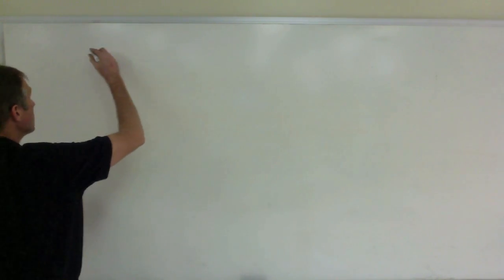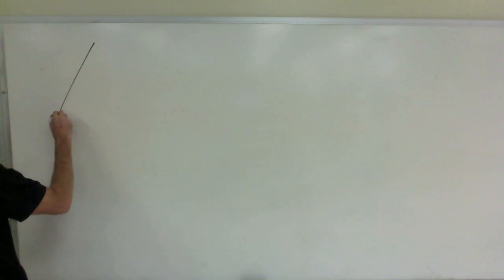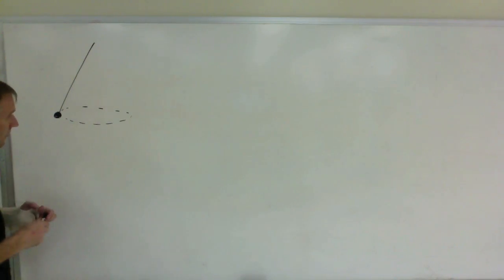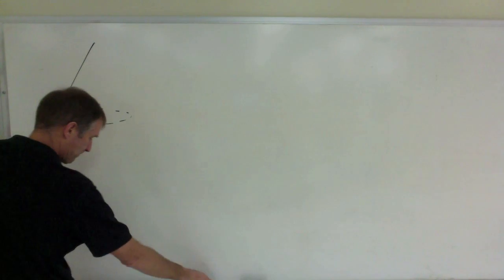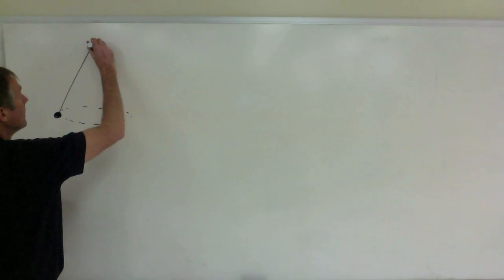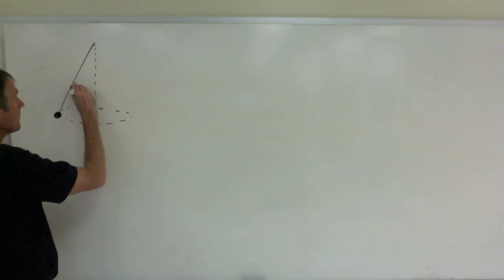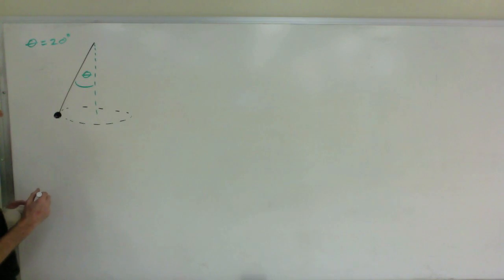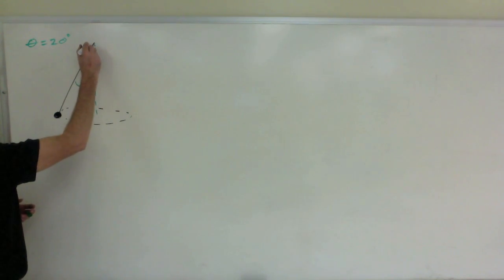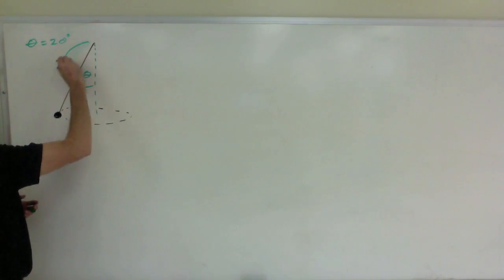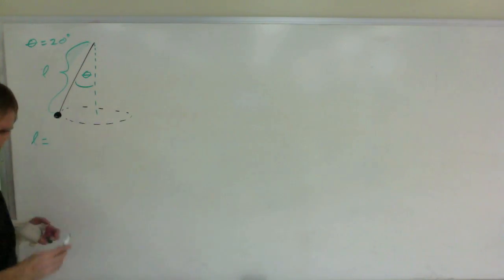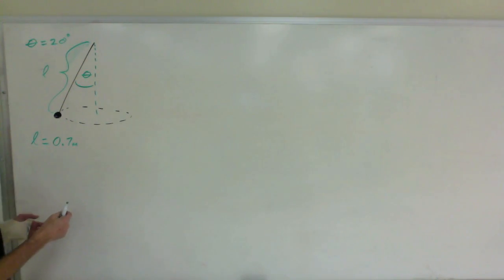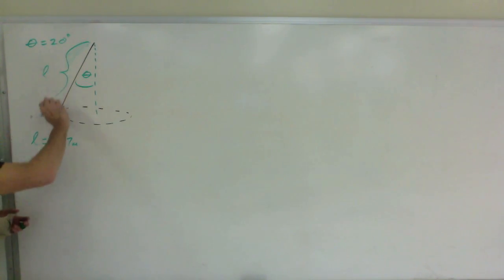So draw a force diagram — but first let's draw a picture. There's the ball, going around in a horizontal circle in the horizontal plane. There is some angle theta that it makes. When I put in numbers I'm going to say that angle is 20 degrees. The string length is 0.7 meters. I want to express the speed in terms of the angle.